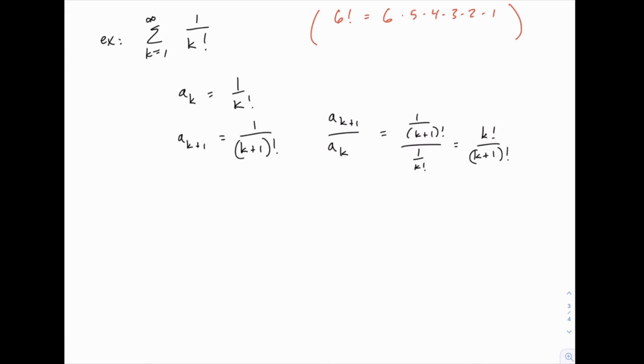First we can simplify this combined fraction and just write it as k factorial over (k+1) factorial. Remembering that dividing two fractions, you can multiply by the reciprocal of the denominator.